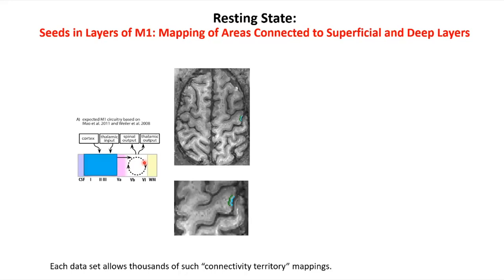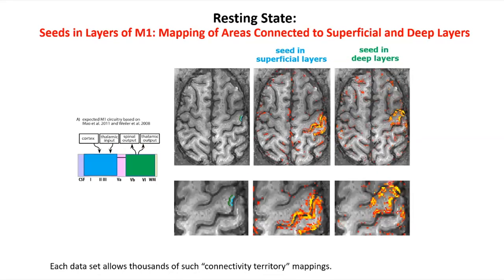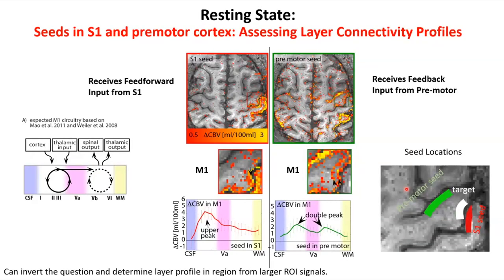In a purely empirical experiment, we took a seed in the upper layers of motor cortex and found correlation with a large sensory area — really interesting. Then we took a seed in the lower layers and found that the correlation structure with the brain is extremely different. This is completely new information we never had just by averaging large seeds or parcels.